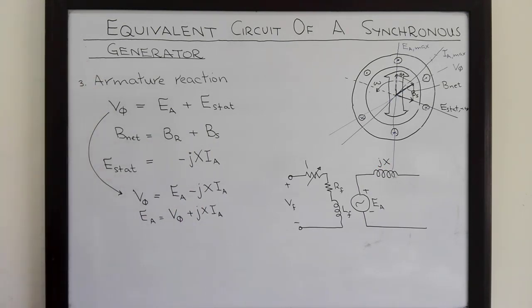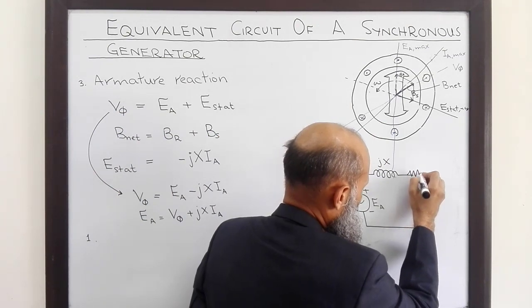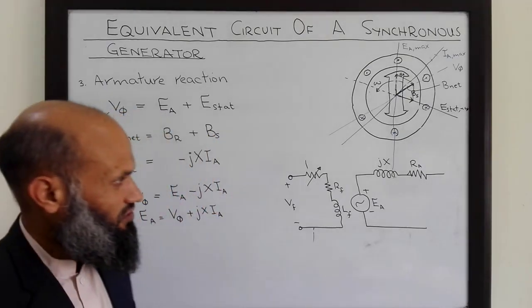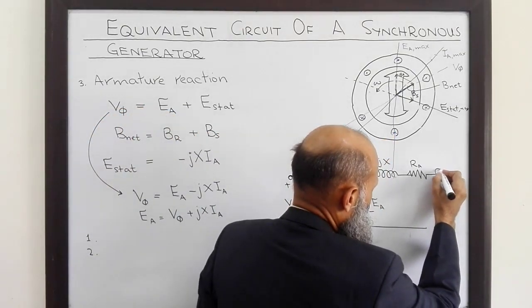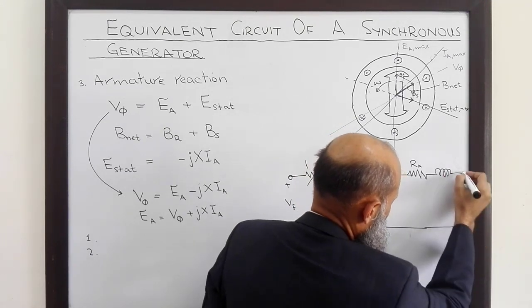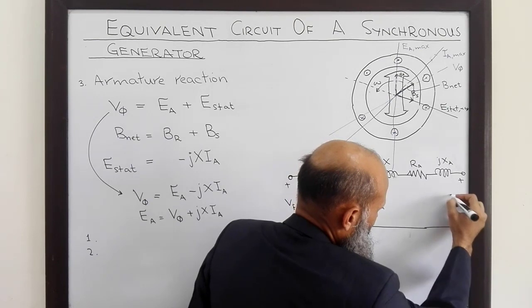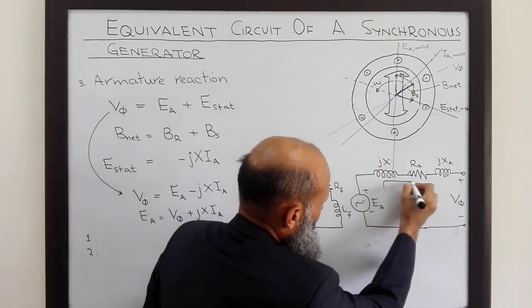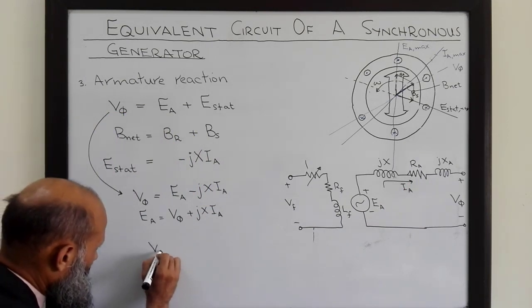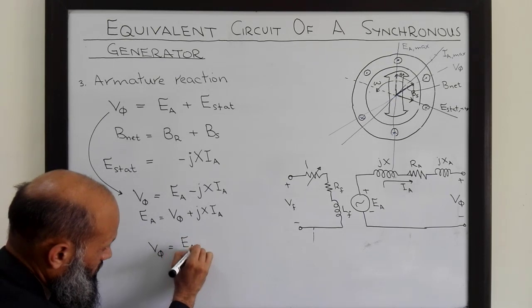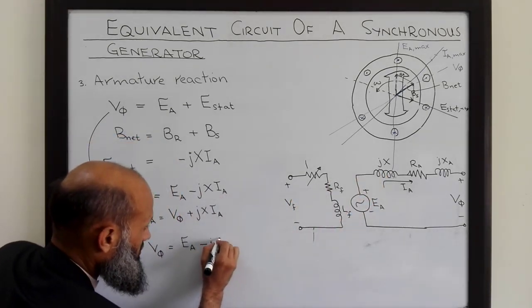The remaining two effects are straightforward. The resistance of the coils — we add a resistor Ra, the resistance of the armature winding. The second effect, the inductive reactance of the armature windings, is represented by an inductor jXA. This gives us the output voltage V_phase, with current Ia flowing. Incorporating all these effects: V_phase = Ea - jX·Ia (armature reaction) - Ia·Ra (voltage drop across resistance) - jXA·Ia (voltage drop across leakage reactance).